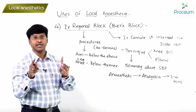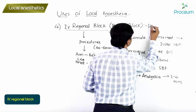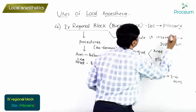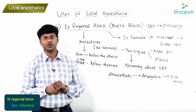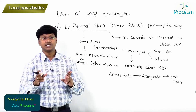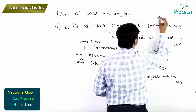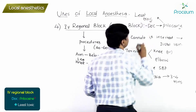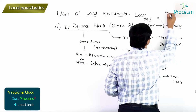An important multiple choice question: in the intravenous regional block, the drug of choice is prilocaine. So in intravenous regional anesthesia, the drug of choice is prilocaine — because this is the least toxic local anesthetic drug.